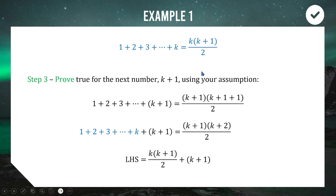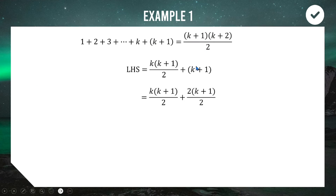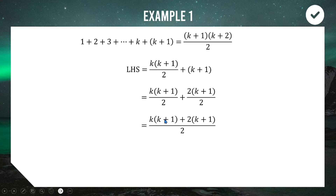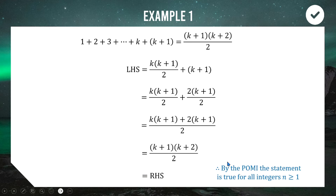Our goal is to show this equals (k+1)(k+2)/2. We write k+1 as 2(k+1)/2 to get common denominators, then add the numerators: k(k+1) + 2(k+1). We can factorize the common factor of k+1 to get k+1 times (k+2), giving us (k+1)(k+2)/2 — exactly the right-hand side. Therefore, by the principle of mathematical induction the statement is true for all integers n ≥ 1.